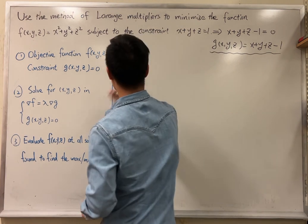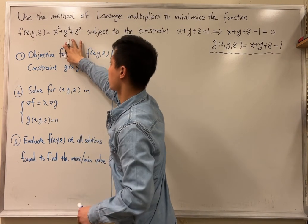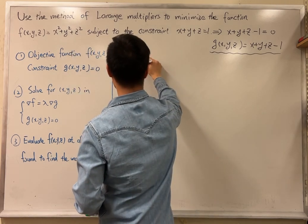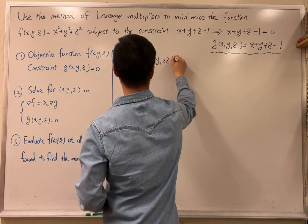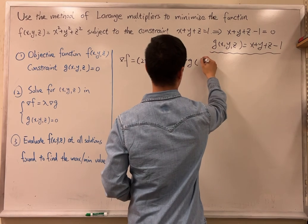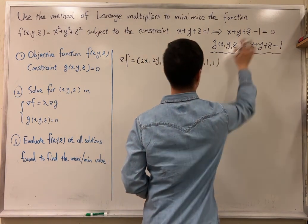And then we calculate the gradient of f. Gradient of f is partial partial x, partial partial y, partial partial z, which is 2x, 2y, 2z, in this case, and then gradient of g is going to be 1, 1, and 1, by taking the partial derivative.